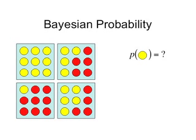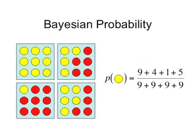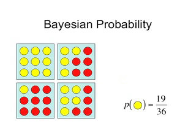Before we attack that problem, let's work on something simpler first. Say I have four boxes, and inside each box I have nine circles, and each circle is either colored red or yellow. What's the probability, if I pick a box at random and then a circle at random, of getting a yellow circle? Well, that's just the total number of yellow circles over the total number of circles — in this case, 9 plus 4 plus 1 plus 5 over 4 times 9, which is just 19 over 36.